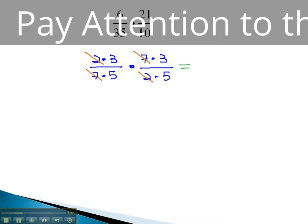We just multiply across 3 times 3 to get 9, and 5 times 5 to get 25. 9 over 25 is our final solution. Notice we had to factor first before we are allowed to reduce.